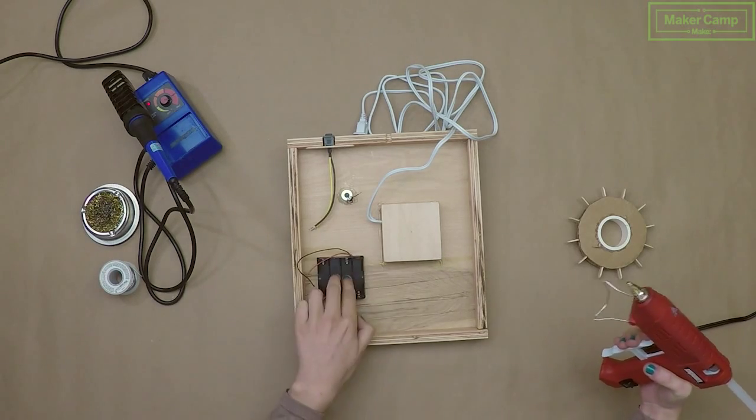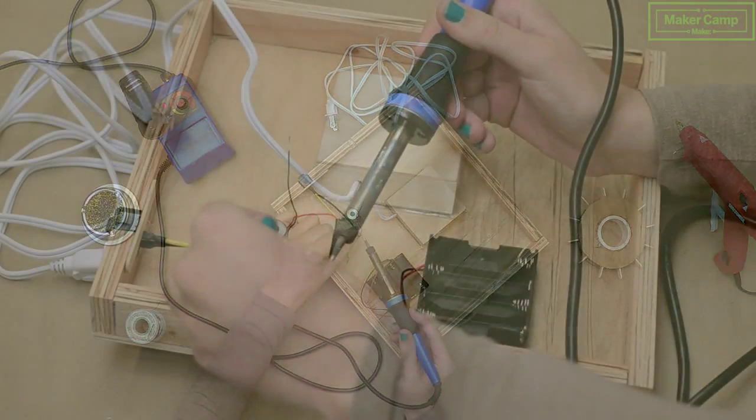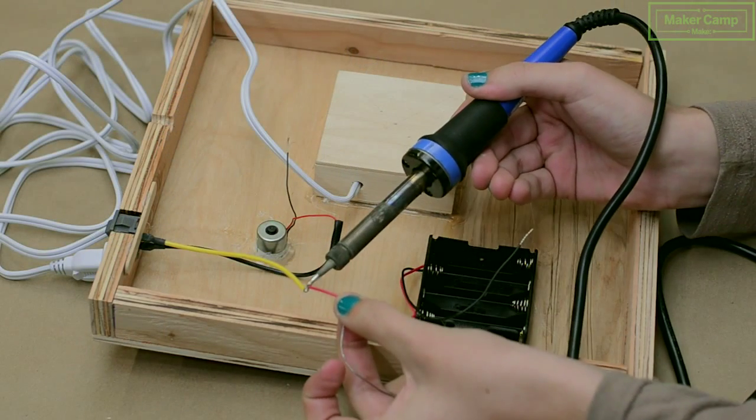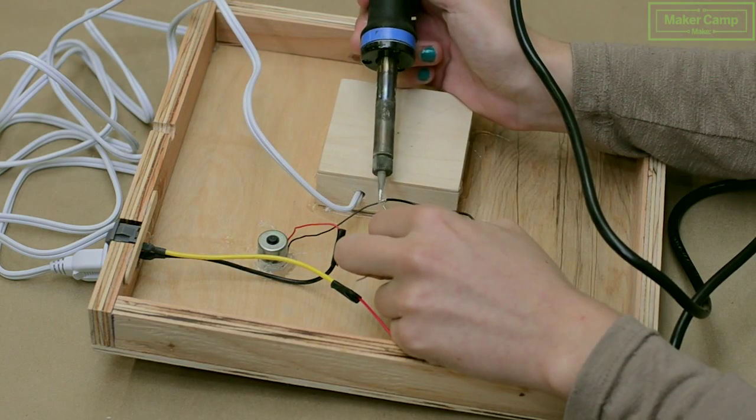Glue your switch into place and glue your battery holder to the bottom of the base near the motor and the switch. Now solder your circuit together. The switch should connect to the red wire on the motor to the red wire on the battery holder, and the two remaining black wires should be soldered to each other.